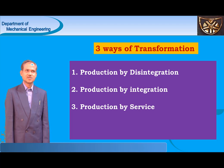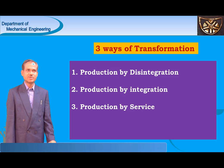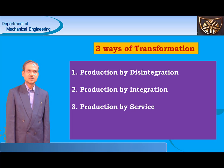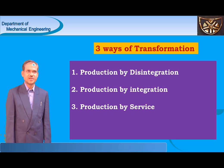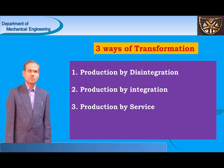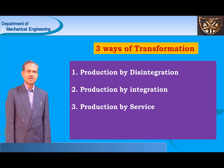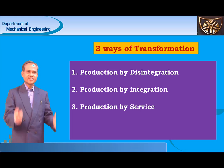Coming to the introduction to production — what do you mean by production? Production consists of a sequence of operations that transform materials from a given state to a desired form. The given state means raw materials, and the desired form means the finished product stage.